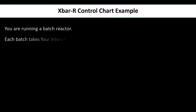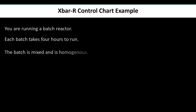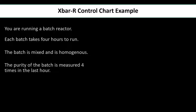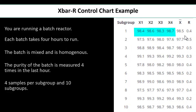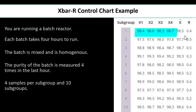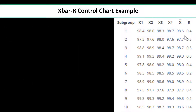Suppose this inconsistency is natural — it's not reasonable to expect the between and within subgroup variation to be the same. For example, you're running a batch reactor. Each batch takes four hours to run. The batch is mixed and homogeneous. The purity of the batch is measured four times in the last hour. You have four samples per subgroup — X1, X2, X3, X4 — and a total of ten subgroups, with the average and range calculated as shown.